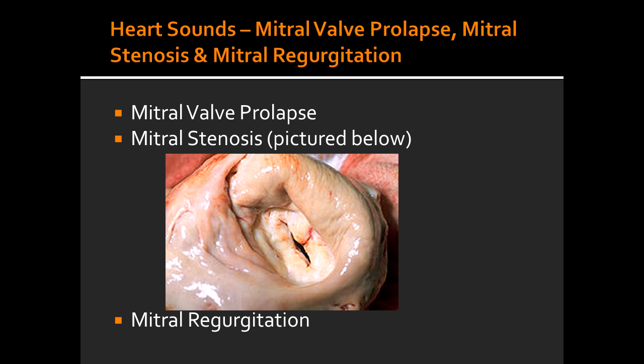In what group of patients will mitral valve prolapse most commonly occur in? Mitral valve prolapse most commonly occurs in young women and patients with Marfan syndrome. The characteristic sound that can be heard in mitral valve prolapse is the mid-systolic click.